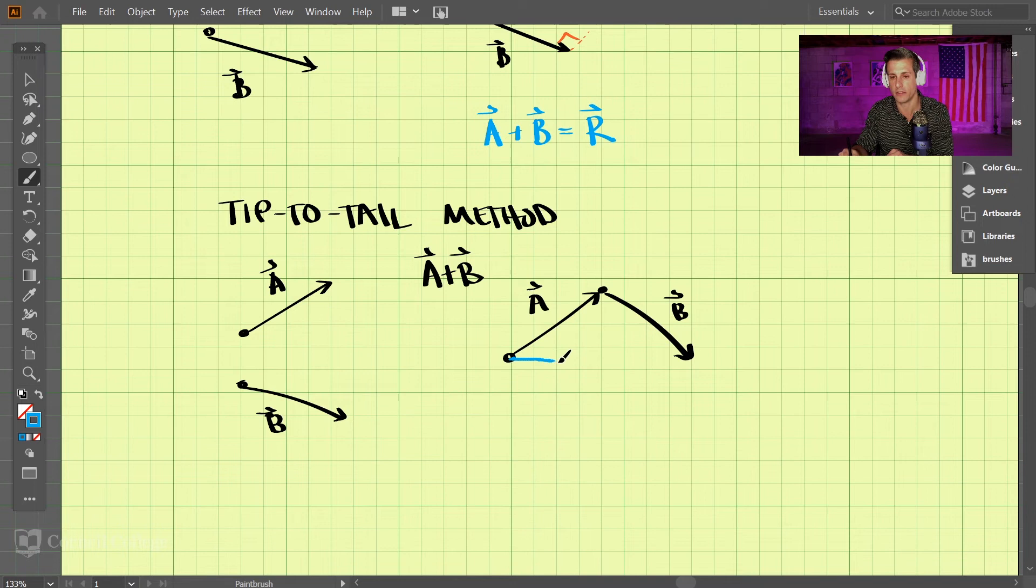Our resultant vector goes from the tail of the first vector to the tip of the second vector, so something like this. So that is our resultant vector. So we have A plus B equals this resultant vector, and that is the tip-to-tail method.